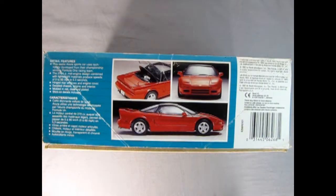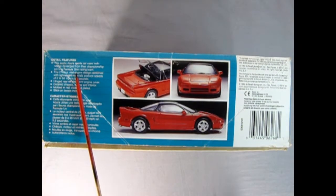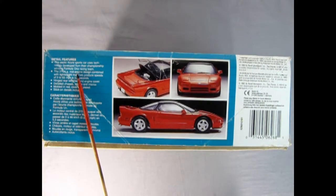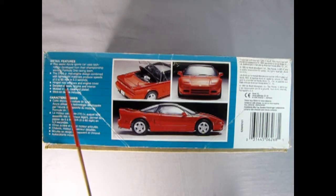On this side of the box we get the detail features. This exotic Acura sports car uses technology developed from their championship winning Formula One race team. That's pretty cool. It's got the engine in here, detailed rear window, detailed chassis, molded in red with clear and plated parts. Stick on decals or stickers are included.